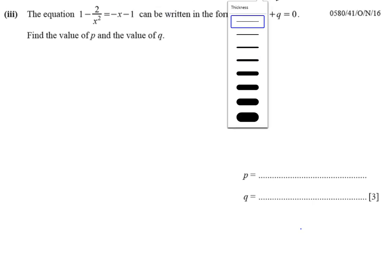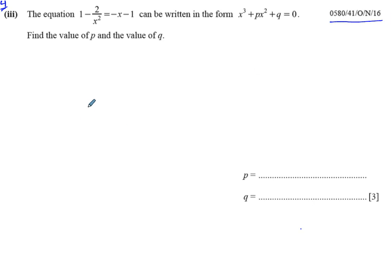So I'm going to answer that question now. This is a very common question that comes up, and it's actually quite simple to deal with. It's telling us that there's an equation, which is 1 minus 2 over x squared equals minus x minus 1. It can be written in the form x cubed plus px squared plus q equals 0. So you have to basically convert the equation from this form into that form.